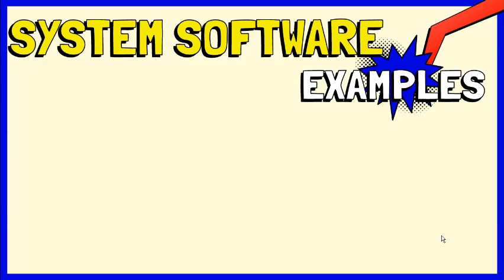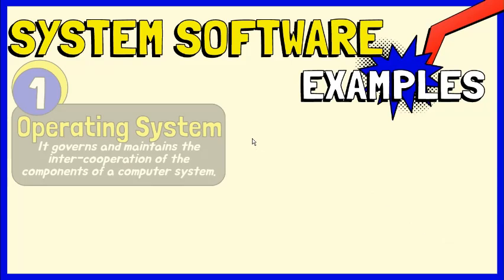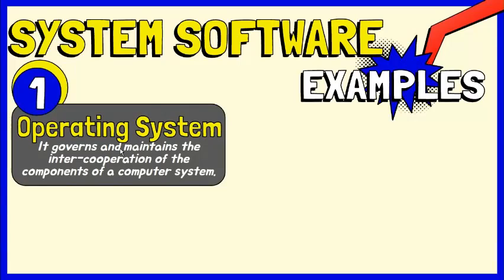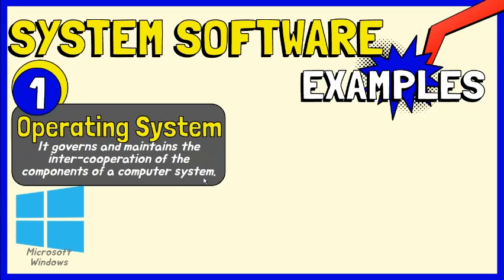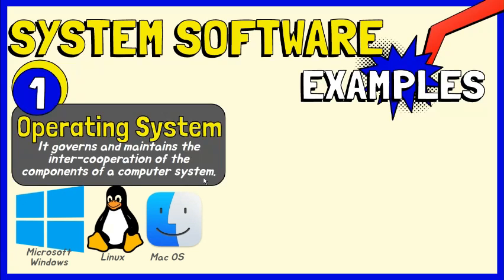These are examples of system software. The operating system is the main program that governs and maintains the inter-cooperation of the components of a computer system. It acts as a bridge for the interface between man and machine. For example, Microsoft Windows, Linux, and macOS.